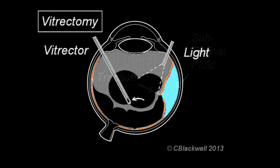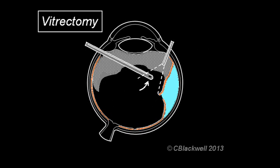Here again, vitrectomy surgery is used to clear out the central vitreous, which directly removes the traction on the tear.